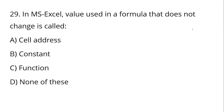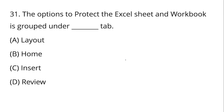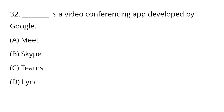In MS Excel, a value used in a formula that does not change is called a Constant — Option B is the correct answer. To show more decimal places in an MS Excel cell, use the Increase Decimal option — Option D. The option to protect the Excel sheet and workbook is grouped under the Review tab, where you can password-protect your Excel sheet or workbook.